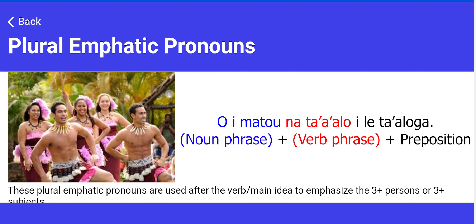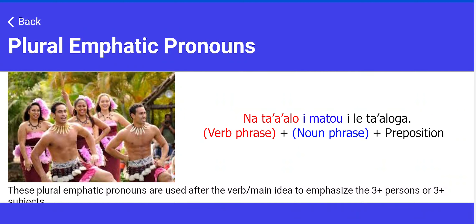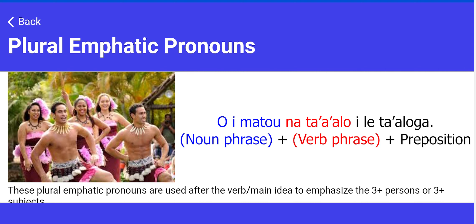These are two separate phrases — actually three, because there is a prepositional phrase in there — a noun phrase and a verb phrase with a prepositional phrase. So it's still one sentence, but the phrases are rearranged. Instead of a verb phrase with a noun phrase following it, you can put the noun phrase in front in its proper format: o plus the emphatic pronoun, imato. These pronouns are used for three or more people.